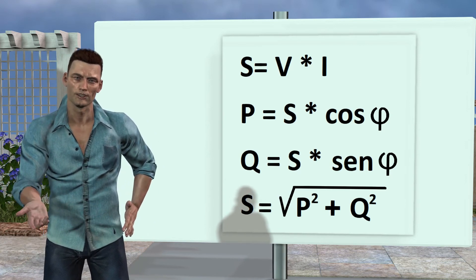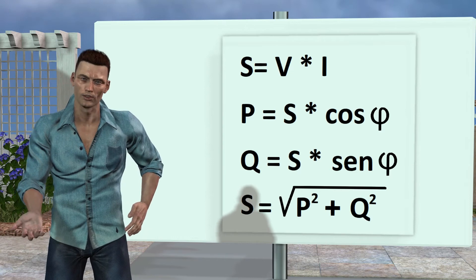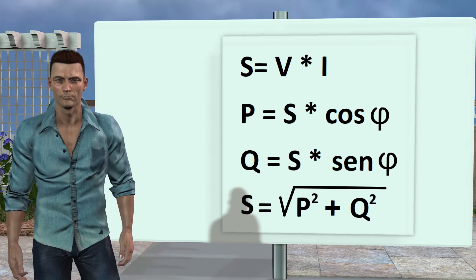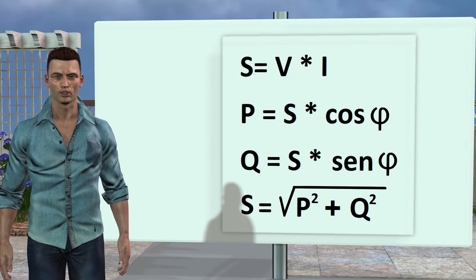Finally, the RMS value of the reactive power is calculated multiplying the apparent power by the sine of phi. Q equals s sine phi.